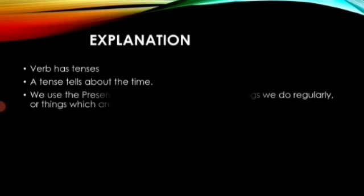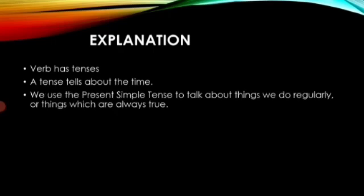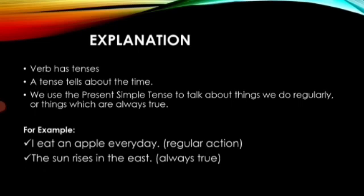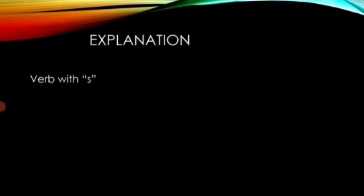Verb has tenses. A tense tells about the time. We use the simple present tense to talk about things we do regularly or things which are always true. For example, 'I eat an apple every day' — that is a regular action. Or 'I brush my teeth every day.' 'The sun rises in the east' — that is always true. Or 'the earth revolves around the sun.'